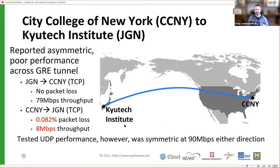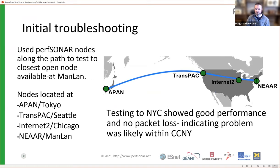Interestingly, we decided to take a quick look using perfSONAR: what if we do UDP testing? UDP was fine both directions. So we grabbed a couple of perfSONAR nodes along the route and did testing from APAN to TransPAC — the Seattle node mentioned earlier — and from APAN to Internet2 in Chicago at the Starlight Exchange, then did the full path. We looked at all these individual tests running between network segments. They all looked good. So we concluded the problem had to be somewhere in CCNY, because it was the only place we were seeing poor performance.